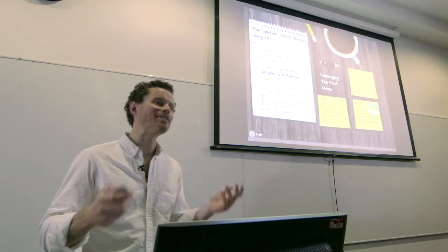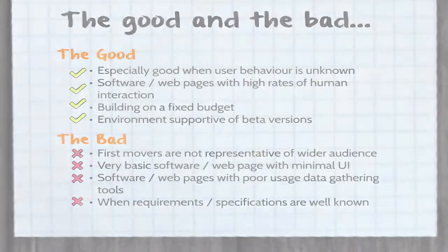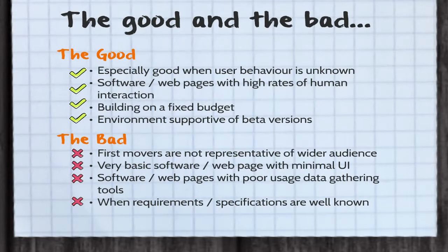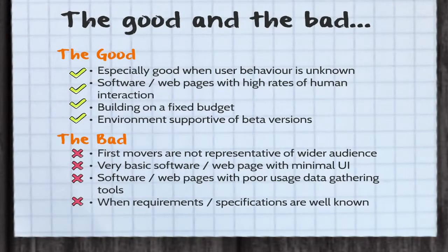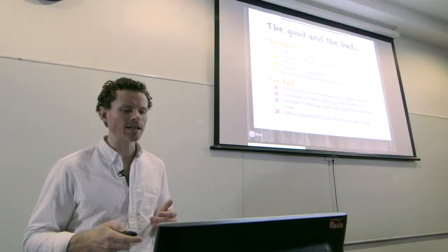When is it good and bad to use this approach? It's especially good when you don't really know how users are going to use your software or web page, and obviously great for software and web pages that have high rates of human interaction. It's good if you're building on a fixed budget, but you have to have an environment supportive of beta versions. When not to use it: if your first movers are not representative of your wider audience, there's not much point. Also, if you're designing very basic software or are really confident you know the requirements well, there's no point going to all this extra effort. And if you don't have the ability to gather usage information, again this is not a good technique to employ.